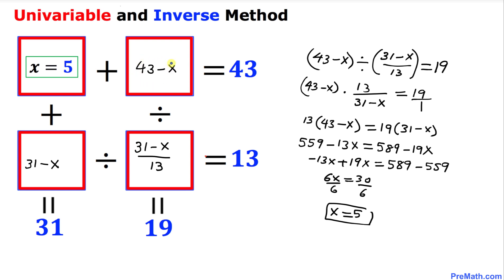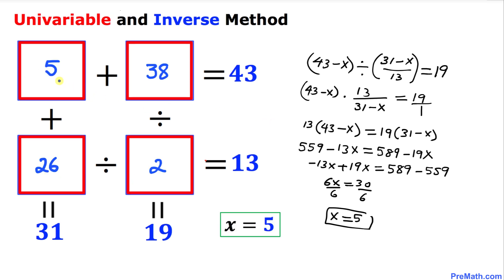Now wherever we see x, we replace it with 5. So: 43 minus 5 equals 38, and 31 minus 5 equals 26. For the remaining box: 26 divided by 13 equals 2. Our final values are 5, 38, 26, and 2, using the univariable and inverse method. These values satisfy the puzzle. Thanks for watching and please subscribe for more exciting videos!